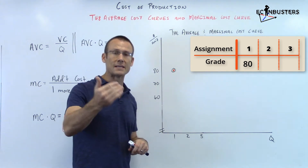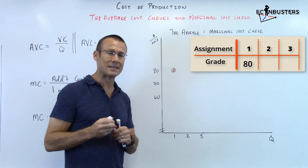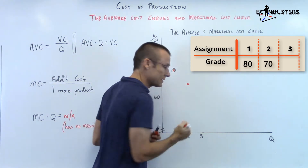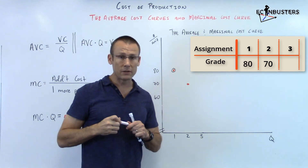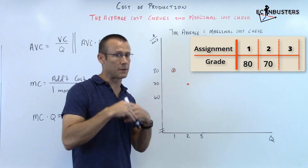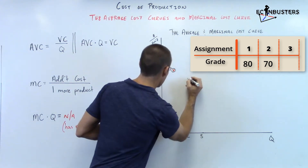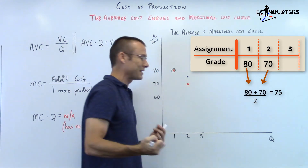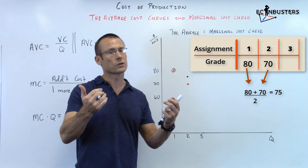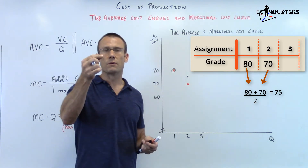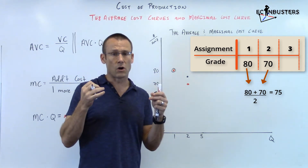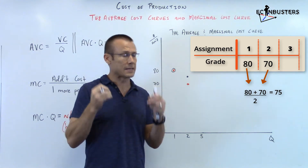Second assignment: the grade you make on that is a 70. So your marginal grade is a 70. However, that would not be your average. If there were only two assignments, your average would be a 75. Notice right off the bat: if your marginal grade is below your average, you're going to pull your average down. If the marginal cost is below the average variable cost — or the average total cost — if the marginal is below it, it's going to pull it down.